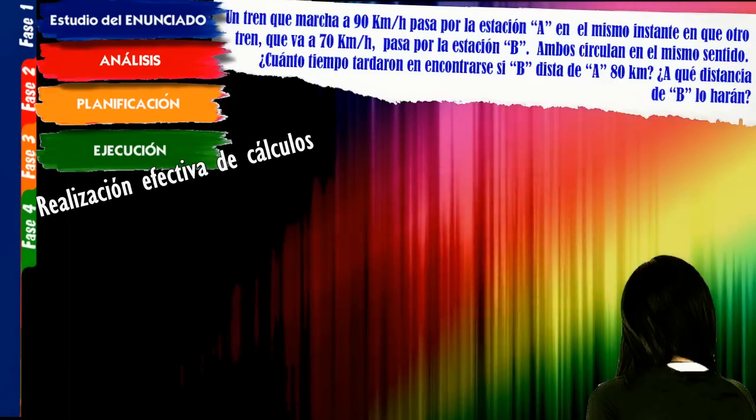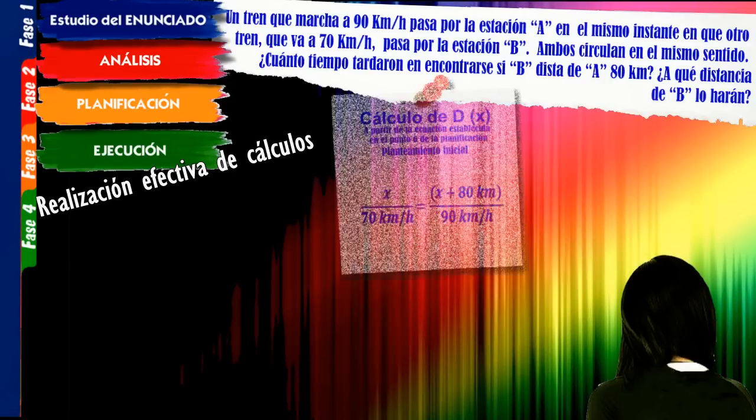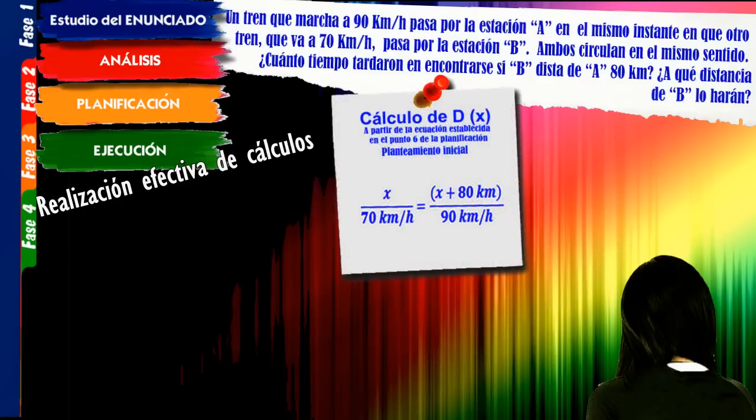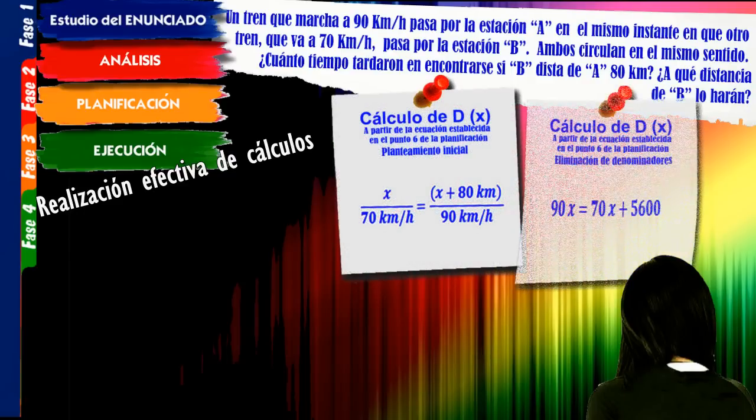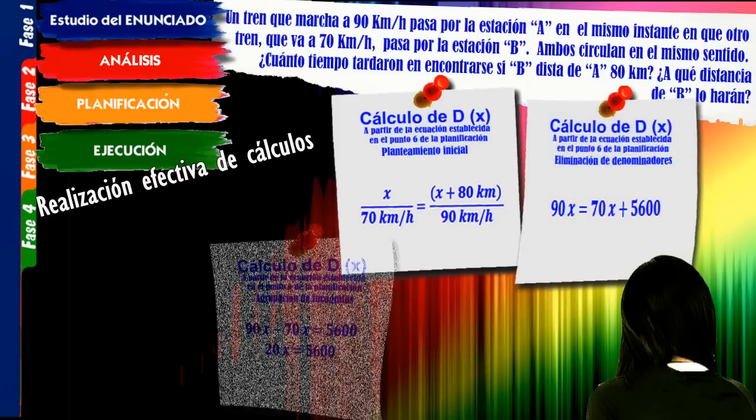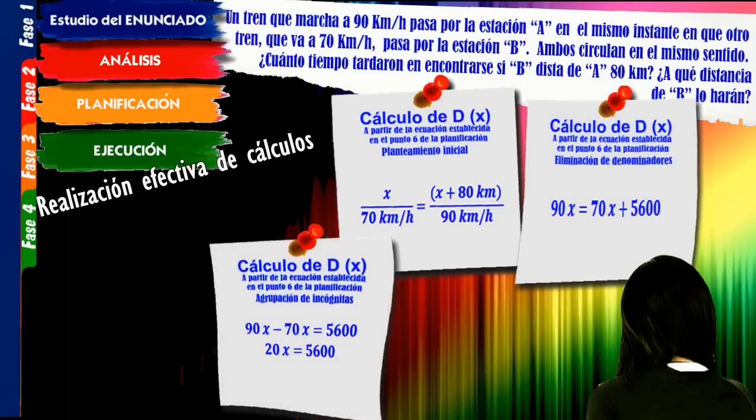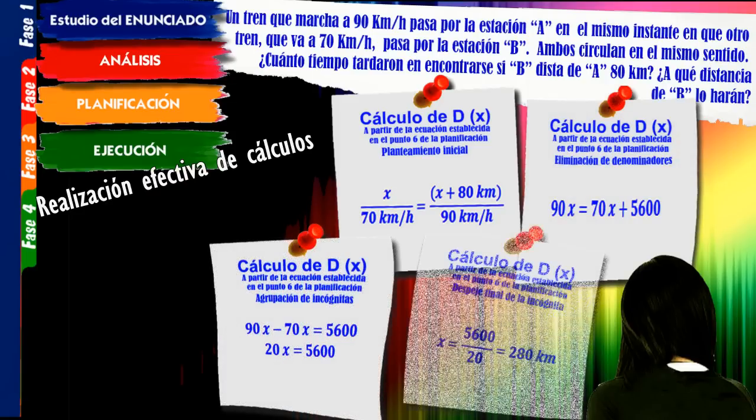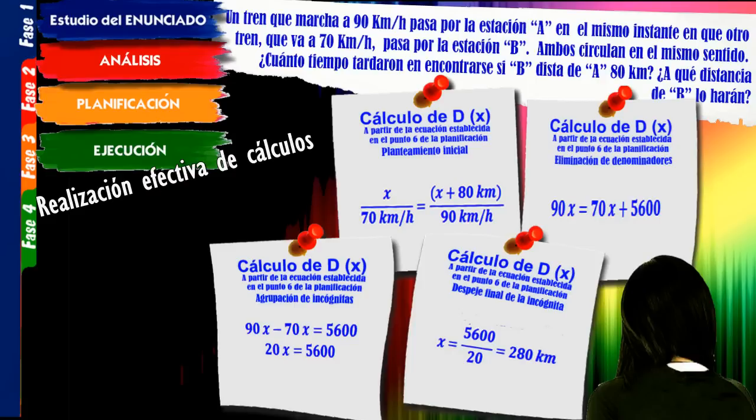Establecido y revisado el plan de actuación, procede pasar a la ejecución práctica de las operaciones previstas para calcular las incógnitas intermedias y las soluciones finales. Conviene estimar siempre la coherencia de los resultados obtenidos y especificar la unidad que cada cifra representa.